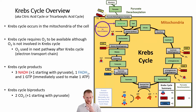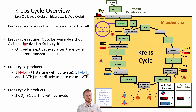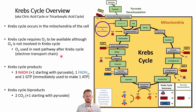Now let's talk about what happens once the Krebs cycle is going. The Krebs cycle happens within the mitochondria — all aerobic metabolism happens in the mitochondria. The Krebs cycle requires oxygen to be present, but the Krebs cycle itself does not directly use oxygen. When oxygen is not present to keep the electron transport chain going, the Krebs cycle will back up and eventually stop or slow down dramatically.